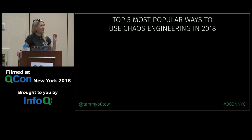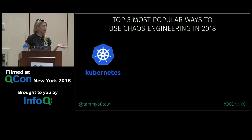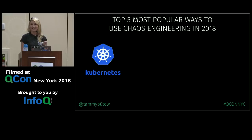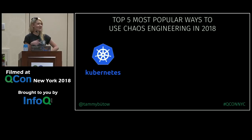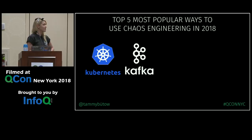You can do chaos engineering on anything, but a lot of the time people pick a service. The first popular one is Kubernetes - a lot of people are practicing chaos engineering on Kubernetes in production right now. Next is Kafka. When I worked at Dropbox, we did a lot of chaos engineering on Kafka - it was one of the first services we picked because we noticed reliability issues, depending on how you're running it within your organization.